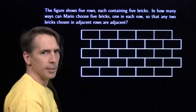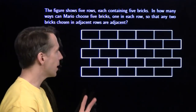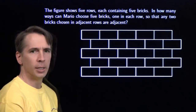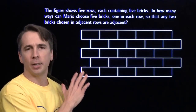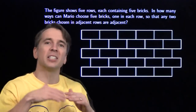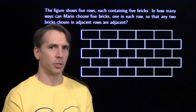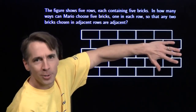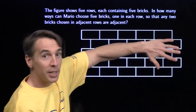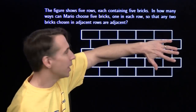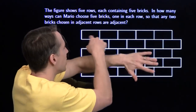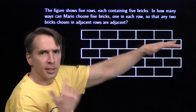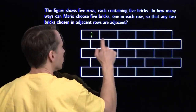All right, time for my second favorite counting strategy. Complicated problem — I'm going to make a simpler version of the problem. Let's just forget the bottom four rows. Then it's really easy, right? Mario just has five bricks — he can choose each one in just one way.